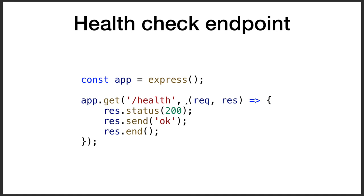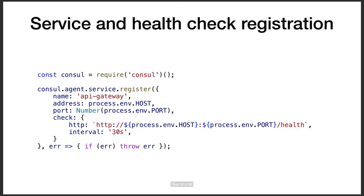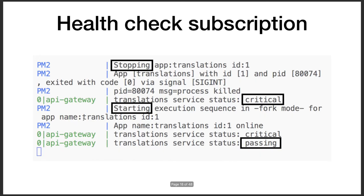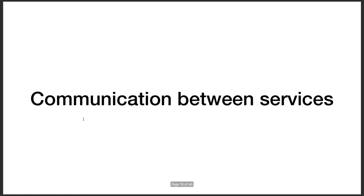Health check endpoints are a service's own responsibility. Whether you write in Python, Node.js, or Java, have a health endpoint returning a 200 status code. As long as it keeps returning 200, the service is considered healthy. You can require the Consul module and register your service to it. Once health services are registered, you'll see logs in pm2 — stopping, starting, critical, passing — all captured in the console.